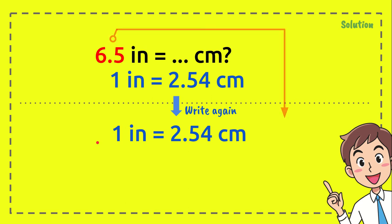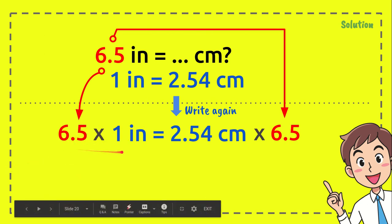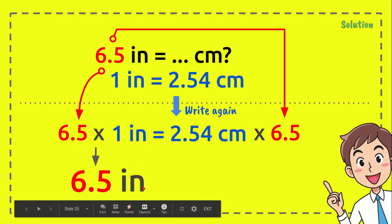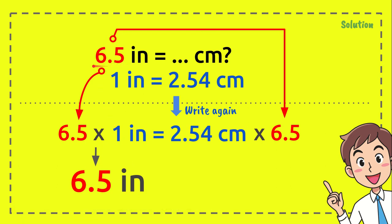So we will have 6.5 on the right side and 6.5 on the left side as well. Now, 6.5 times 1 inch equals 6.5 inches, just like the number from the question.